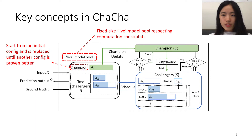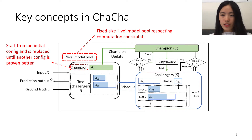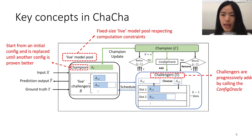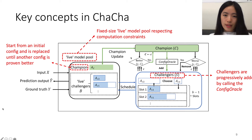The Champion starts with an initial configuration, which is usually a default configuration. It will be compared with the Challengers and will be updated once a Challenger is found to be better through a statistical test.